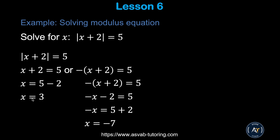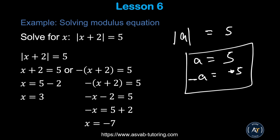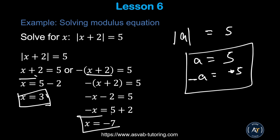Now we'll learn how to solve absolute value equations. The absolute value means the expression has a positive and a negative case. For example, |a| = 5 means a = 5 or a = −5. For |x + 2| = 5: solve both cases to get x = 3 or x = −7.